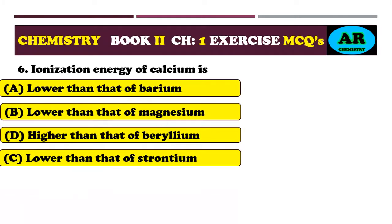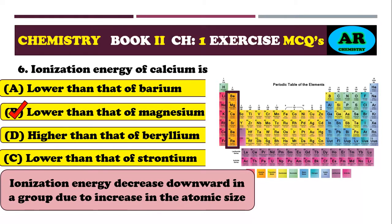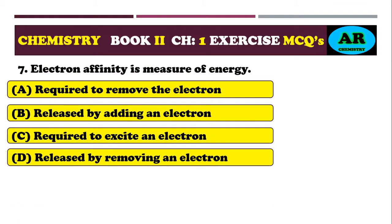MCQ 6: ionization energy of calcium is — option alpha: lower than barium, option beta: lower than magnesium, option delta: higher than beryllium, option charlie: lower than strontium. The correct option is beta. In group 2A, ionization energy decreases down the group with increasing atomic size. Calcium is below magnesium, so calcium's ionization energy is lower than magnesium's.